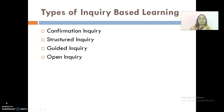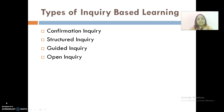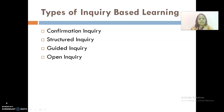Now let us discuss the various types of enquiry based learning, ranging from very structured to the least structured. First is confirmation enquiry: the teacher gives questions along with answers and the method of reaching that answer, aiming to develop investigation and critical thinking skills. Second is structured enquiry: the teacher gives open-ended questions and method of investigation, and students reach evidence-based conclusions. Third is guided enquiry: an open question is given to a group of students, who design their own investigation method. Fourth is open enquiry: the teacher only provides time and support, and students present original questions based on their own curiosity.